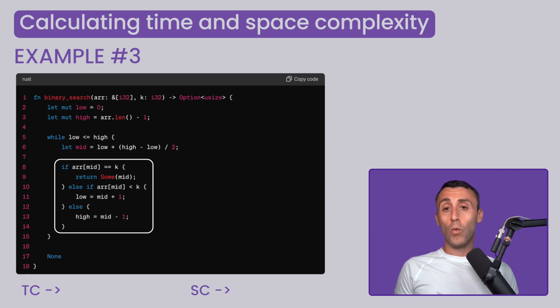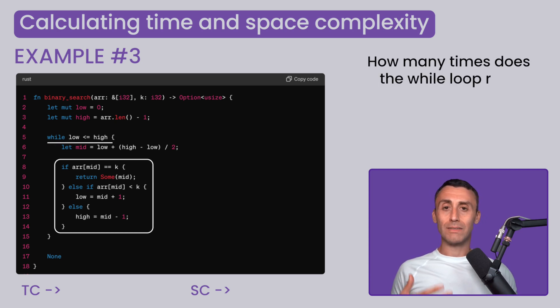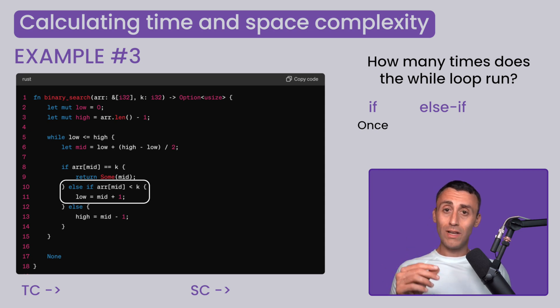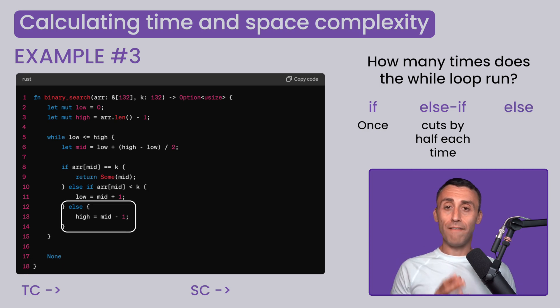This if-else block will be executed the number of times the while loop runs here. And how many times does the while loop run here? Either the if statement will be executed, returning the value we found, and this means that the program is done executing, so there is nothing to worry about. But if the else if statement is true, then the value of low becomes mid plus 1. And so the array to be considered becomes just half, or the number of times the loop will now run becomes half. And if neither the if nor the else if statement runs, the else block runs, and then the value of high becomes mid minus 1, which again cuts the number of times this loop will run by half.